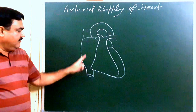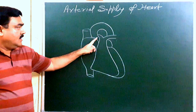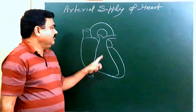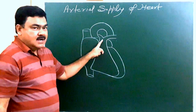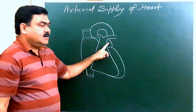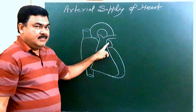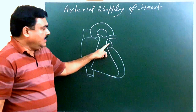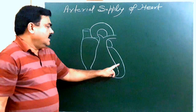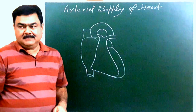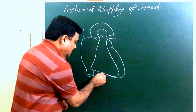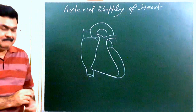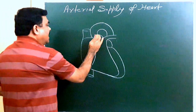In this diagram you can see: this is superior vena cava and inferior vena cava. Here is right atrium, right auricle, and right ventricle. Here is pulmonary trunk. Left atrium and expanded part of left atrium. Here is left auricle and left ventricle. This is the inferior border of the heart. Here is the apex of the heart. This is the arch of aorta.